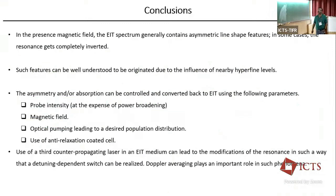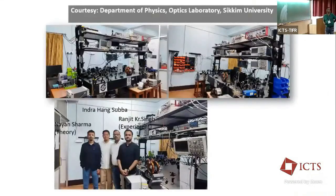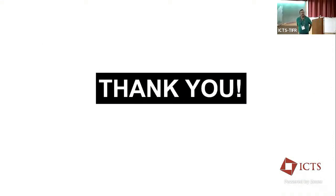In conclusion: in the presence of a magnetic field, the EIT spectrum generally contains asymmetric line-shape features; in some cases the resonance gets completely inverted. Such features can be well understood as arising from the influence of nearby hyperfine levels. The asymmetry can be controlled and converted back to EIT using the probe power, magnetic field, optical pumping of a desired population distribution, or use of anti-relaxation coated cells. Use of a third counter-propagating laser in an EIT scheme can lead to modification of such resonances. These are my students Nayan Sharma and Ranjit from Sikkim University. The floor is now open for questions.